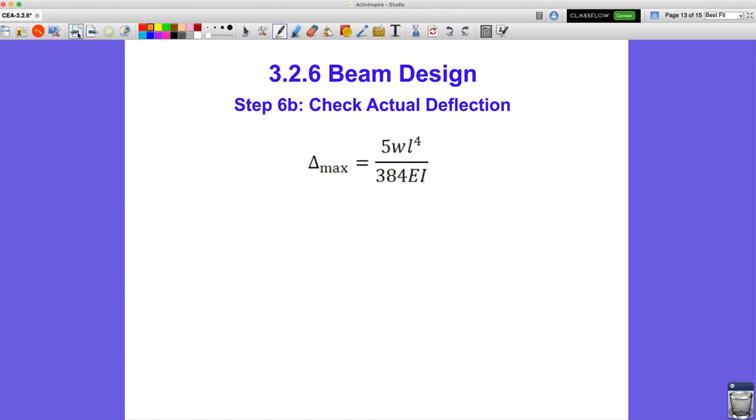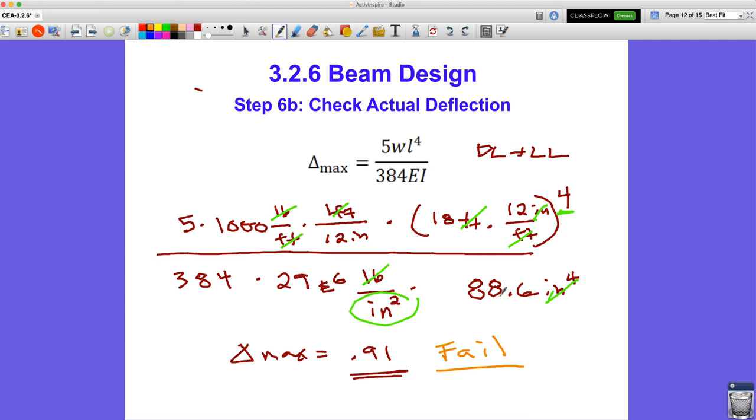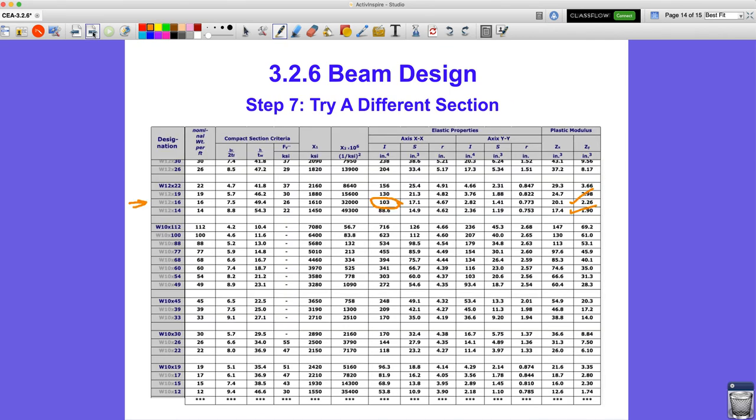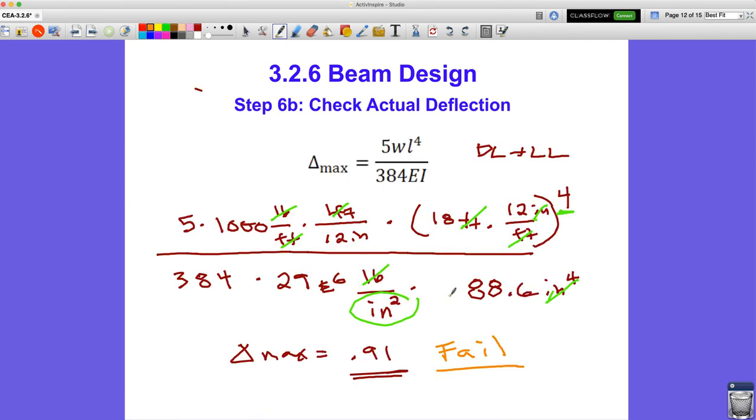So basically now, we're going to go and do this whole thing again, but we're just going to try the 103 instead of the 88.6. Now, if you kept this all in your calculator, all you need to do is multiply the whole thing by 88.6 and divide by 103. And if you do that, then you get a smaller number, and check, check, that'll work. And your final answer for this becomes a W12 by 16 for your final beam design selection.